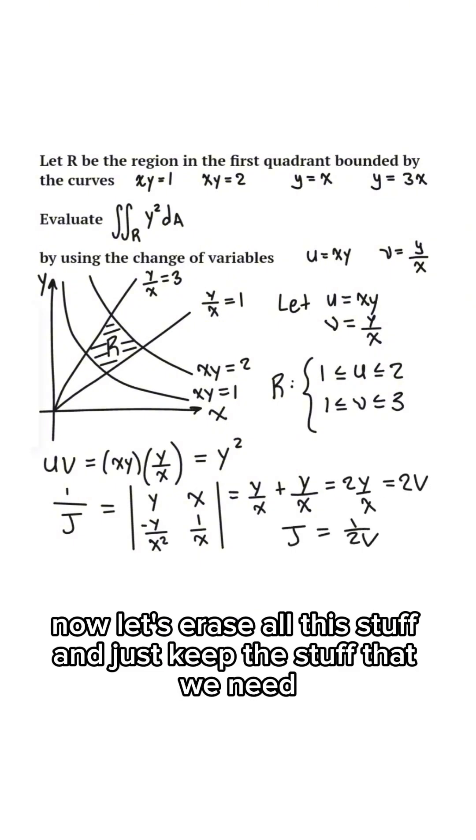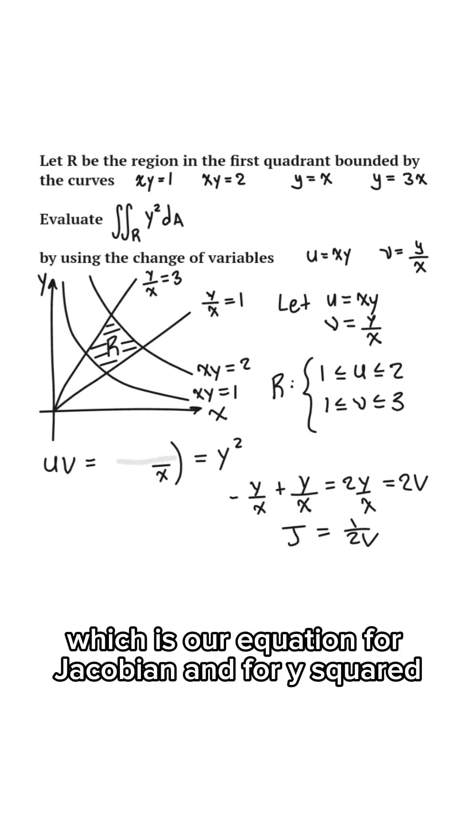Now let's erase all this stuff and just keep the stuff that we need, which is our equation for our Jacobian and for y squared.